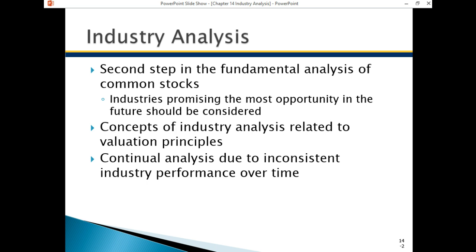There are industries that over the years have done better than other industries. For example, the computer industry over the last 30 years has done better than the automotive industry. In pharmaceuticals, sub-industries like bio-pharmaceuticals have done better than their parent sector of healthcare. Pharmaceuticals fall under healthcare, and a sub-industry could be bio-medical pharmaceutical companies.